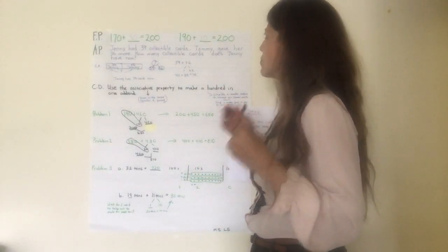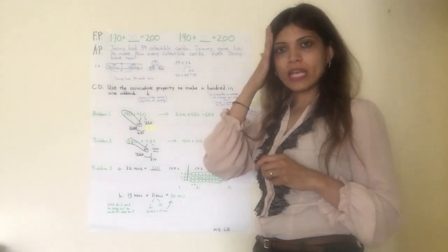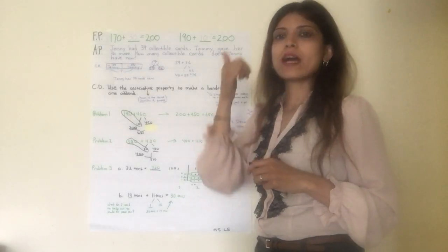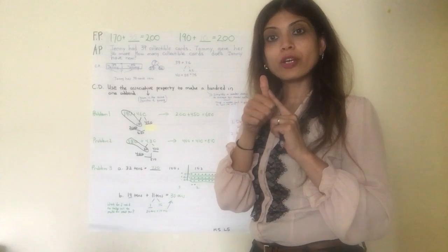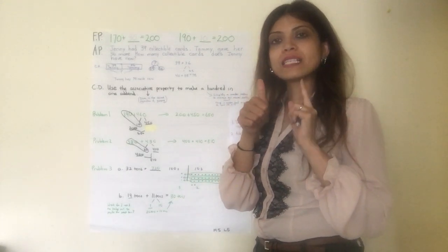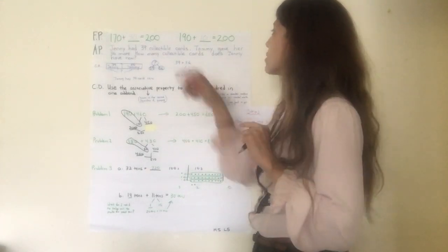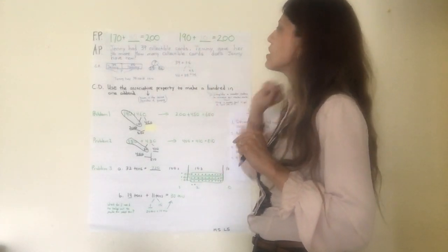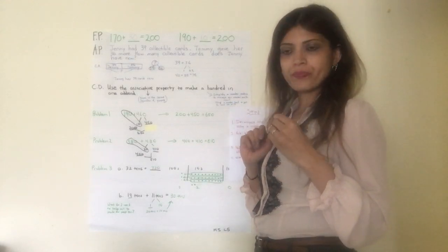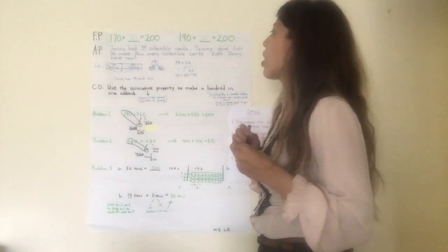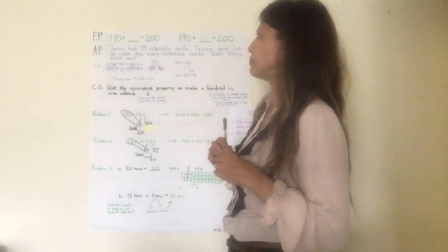190 plus what gives you 200? Again, put 190 in your brain and count up: 190, 200. This one finger represents 10, which is 10, right? So 190 plus 10 equals 200. Awesome job. Now let's move on to our application problem.